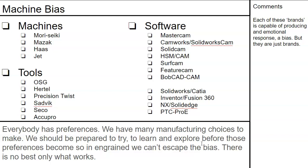Everybody has preferences. We have many manufacturing choices to make — really thousands and thousands of tiny decisions that all build up and affect the end product. We should be prepared to learn and explore before those preferences become so ingrained we can't escape the bias. There is no best, only what works. Each of these brands is capable of producing an emotional response of bias, but they are just brands.